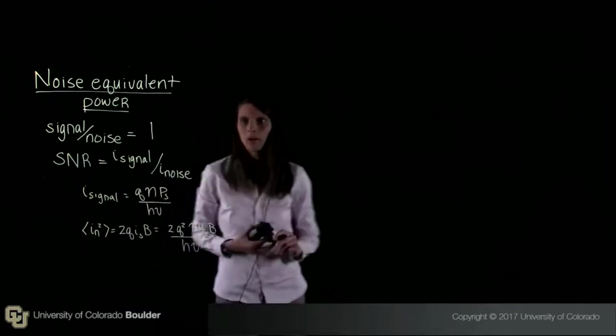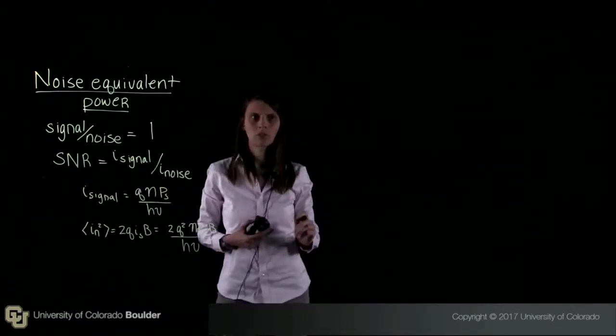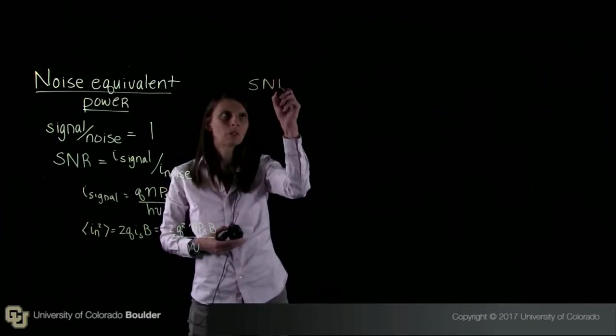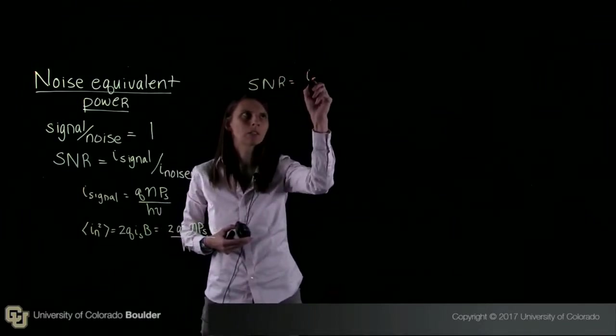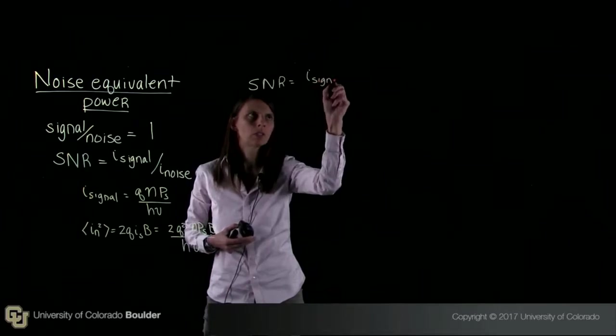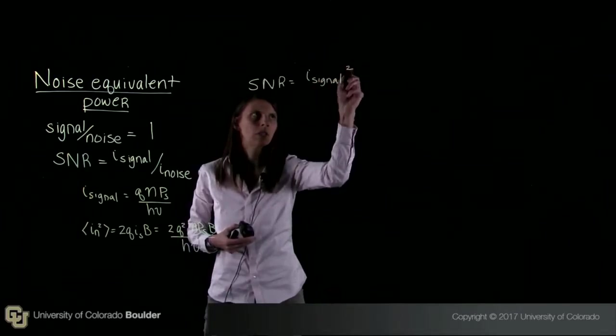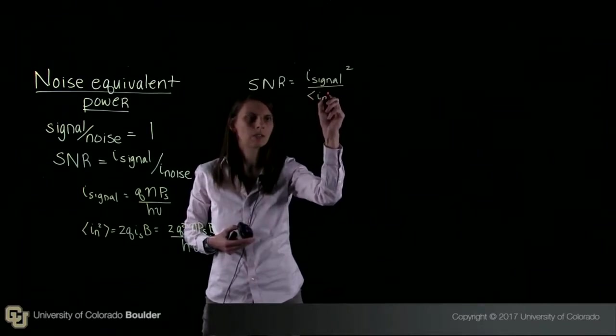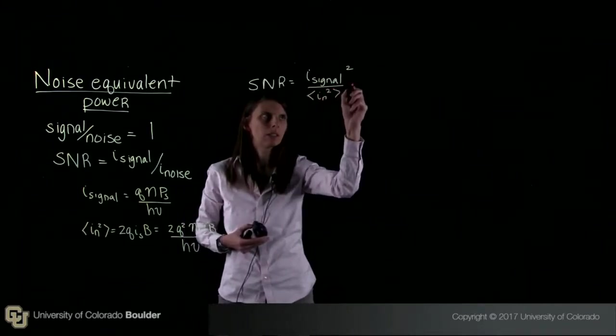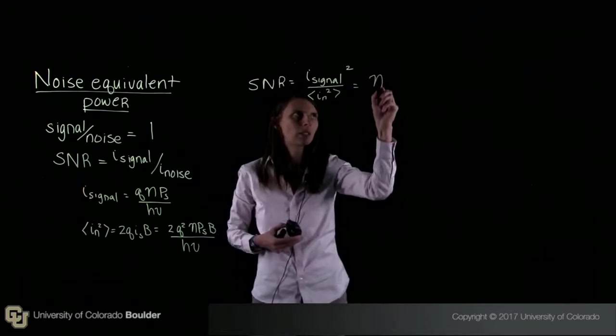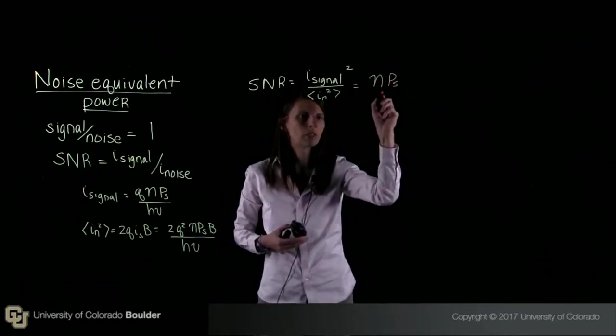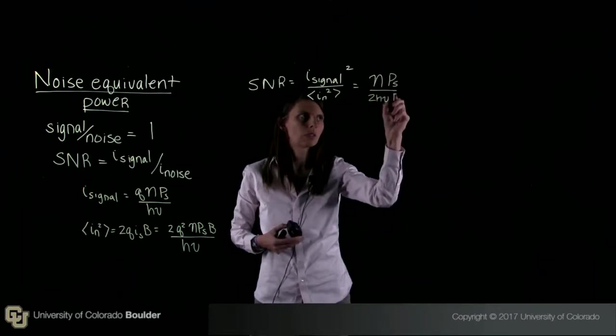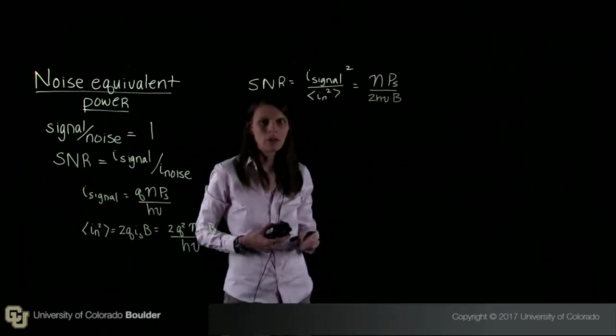So now I can write down an expression for my SNR. My SNR will be equal to I signal squared over IN squared. And this will be equal to eta P sub S over 2 H nu times the bandwidth.